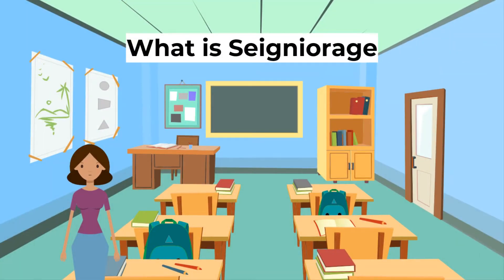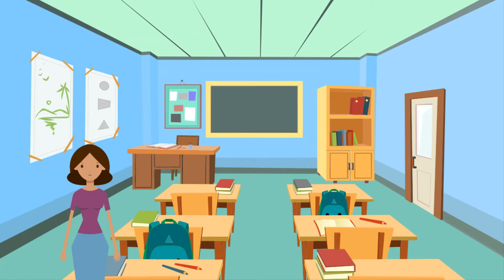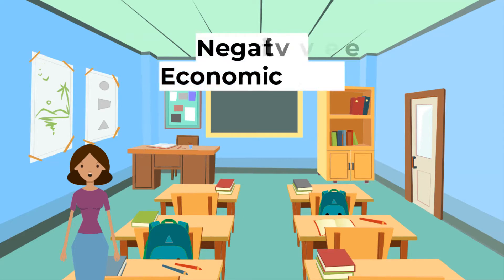So, what is seigniorage? Seigniorage is the difference between the face value of money, such as a $10 bill or a quarter coin, and the cost to produce it. In other words, the economic cost of producing a currency within a given economy or country is lower than the actual exchange value, which generally accrues to governments who mint the money. If the seigniorage is positive, the government will make an economic profit, while a negative seigniorage will result in an economic loss.